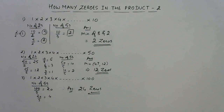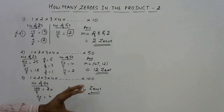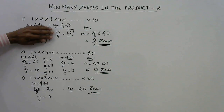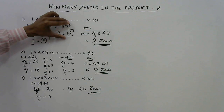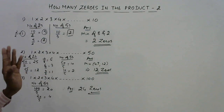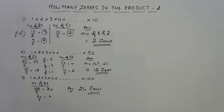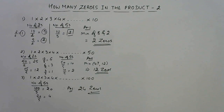So friends, I have reduced the complexity further. Instead of finding the number of twos, you can find only the number of fives and get to your answer very, very quickly. This is very important for all competitive exams and I am sure this is going to save a lot of time for you. Don't forget to share the video links with your friends, and if you haven't done so already, please subscribe to the channel.